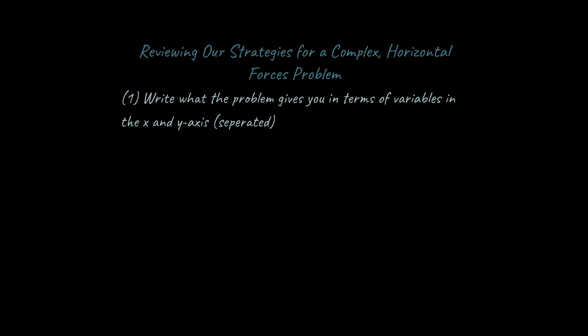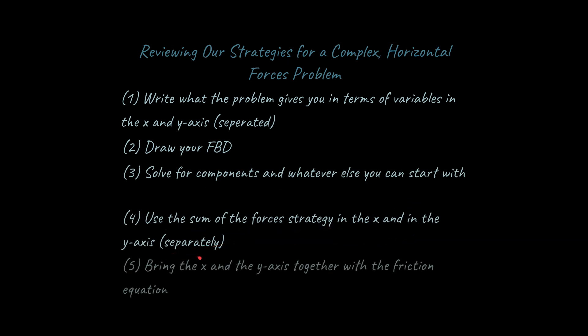What I would like to do at the end here is I would like to review these steps, these strategies. I can tell you right now I've had many smart students who won't listen and follow strategies, and they get lost. You may be a smart student and you may think you're too smart for strategies, but I'm telling you right now, if you put this in the practice, you can solve these problems and avoid mistakes. Just a quick recap. Write what the problem gives you in terms of variables in the x and the y-axis. Separate it out. Draw your free body diagram. Solve for components and whatever else you can start with. Use the sum of the forces strategy in the x-axis and the y-axis separately. And lastly, bring the x and the y-axis together with the friction equation and essentially solve your unknown. If you can follow those five straightforward steps, you can do this.